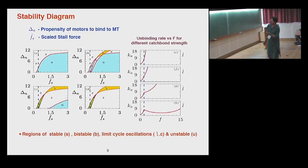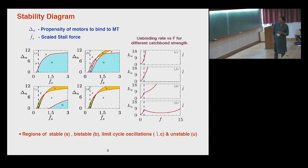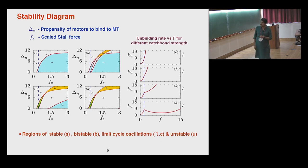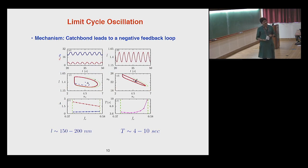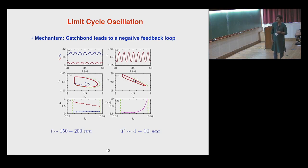The stability diagram is plotted in terms of delta — a measure of the propensity of motors to bind to the filament — and F_s, the stall force at which the motor stops walking. Interestingly, focusing on this diagram, there are regions of linearly stable solutions, unstable solutions, regions of bistable-like behavior, and a region that is not linearly stable but is stabilized by limit cycle oscillations. In the limit cycle regime, spontaneous oscillations are observed, with typical time periods in the range of 4 to 10 seconds for biological parameters, and overlap lengths around 0.1 to 0.2 microns.